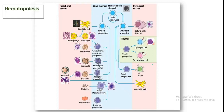Hematopoiesis is the development of blood cells. All blood cells come from stem cells. The hematopoietic stem cell, shown here in blue color, is the starting point of all blood cell development.